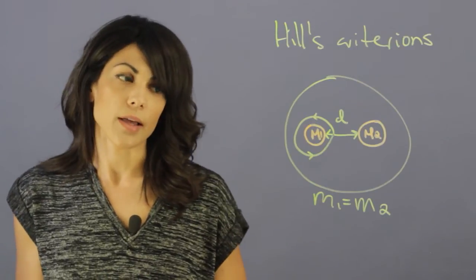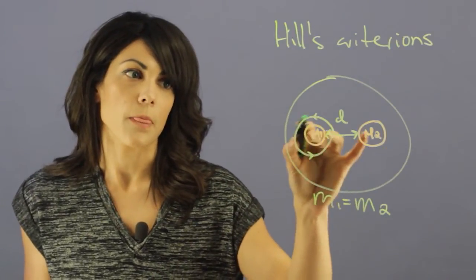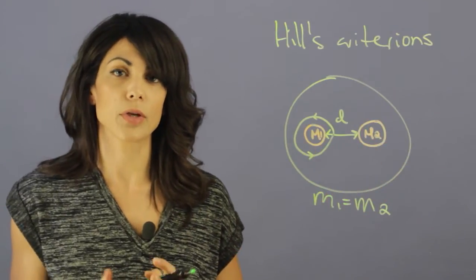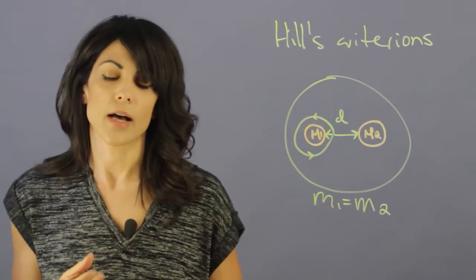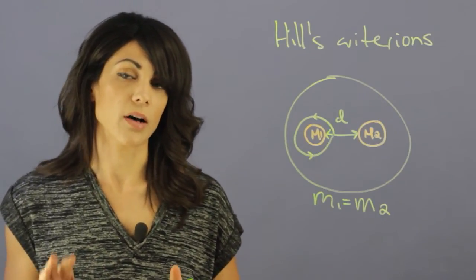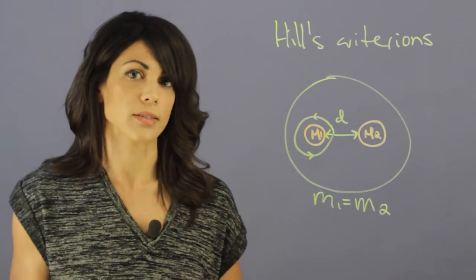And another thing that I want to talk about, a lot of people think figure eights can happen. They can, but they're really unstable orbits. And in fact, a lot of planets get kicked out of the binary system because of this. So, figure eight orbits are not stable.